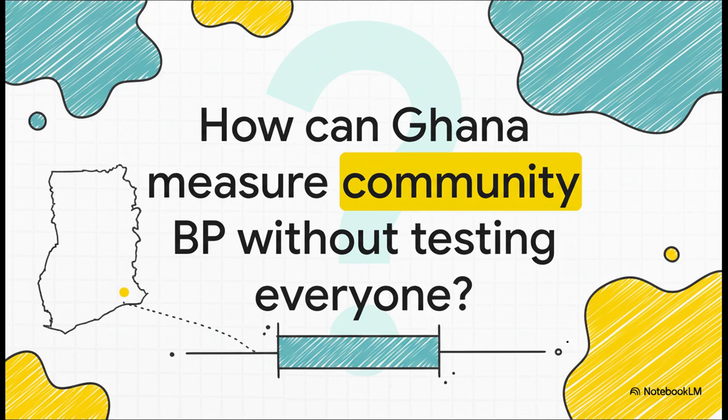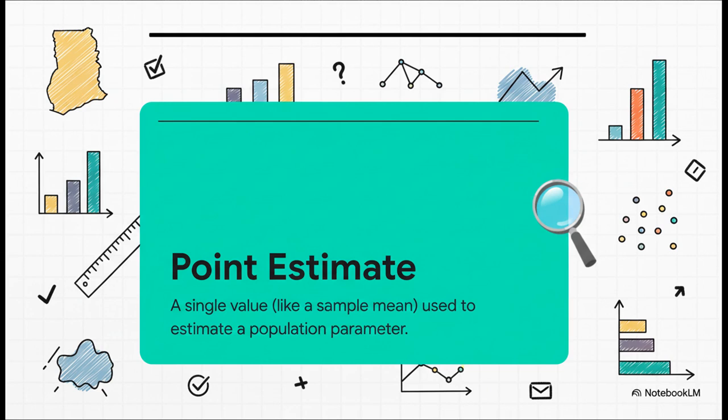This is where stats become a lifesaver. The first thing you'd probably do is take a sample. You'd go out, find a random group of a hundred people, check their blood pressure, and then calculate the average. That single number you get? That's what we call a point estimate. It's basically your best single guess for what's happening in the entire community.